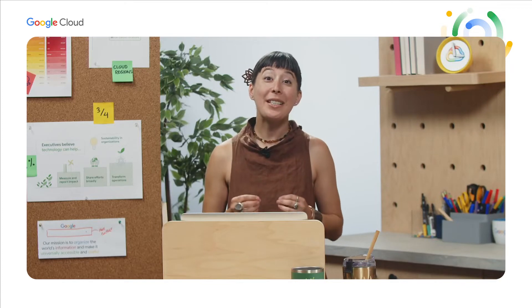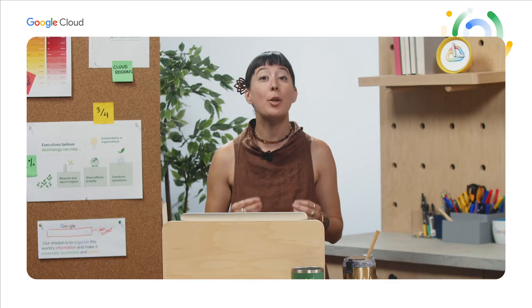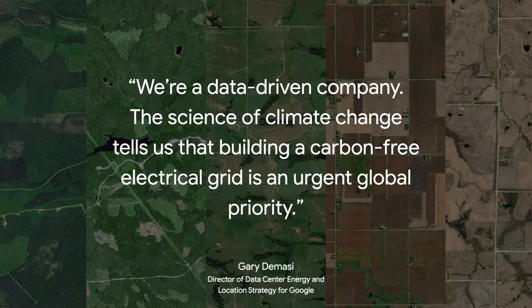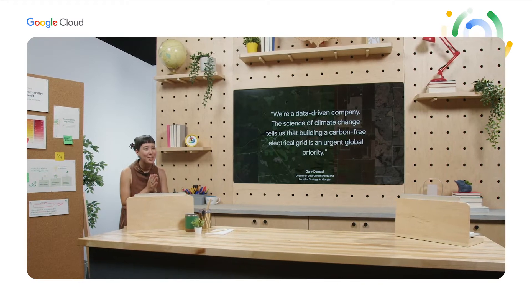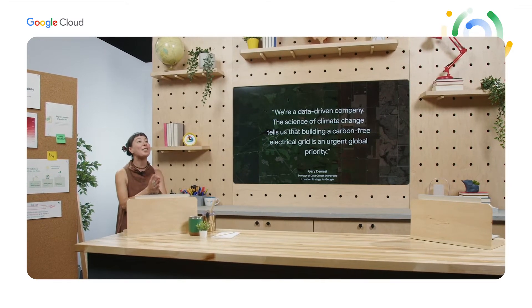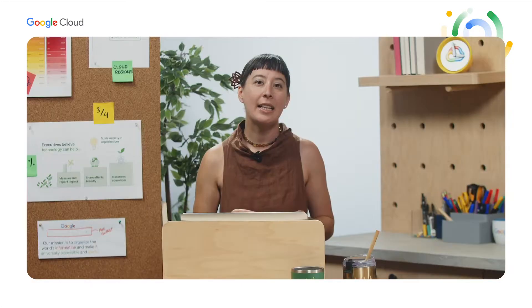Since 2017, Google has matched 100% of its global energy use by purchasing renewable energy and has mitigated the annual carbon footprint of our customers' digital applications and infrastructure. We are also currently working on the ambitious goal of operating 100% of the time on carbon-free energy by 2030, matching our energy demand for every hour of every day in every region where we operate with carbon-free energy supply.